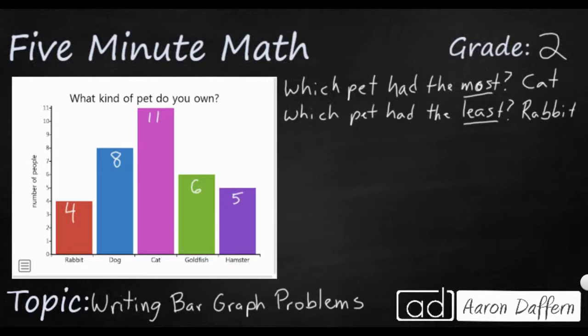So another problem we might be able to write, and we can do this a few different ways, is comparing two of the animals. So I might say how many more. And that's going to set me up for a subtraction problem. How many more students. And then I'm just going to pick two of these different animals. And I'll say chose cat. And I'll just say compared to, let me just pick a dog. Cats and dogs.